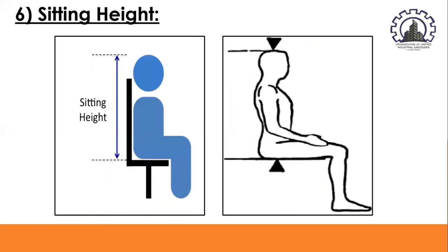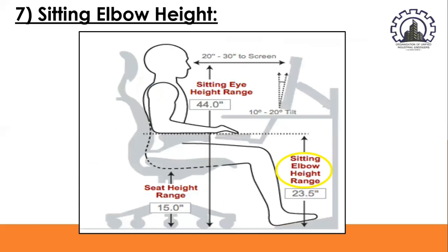Sitting height is the distance from the seat to the crown of the head. It is applied in ergonomics to determine ceiling heights, especially in vehicles, to provide enough clearance for users with large sitting height. Sitting elbow height is the height of the elbow of a seated person above the chair, used to determine armrest heights and work surface heights for seated operators.